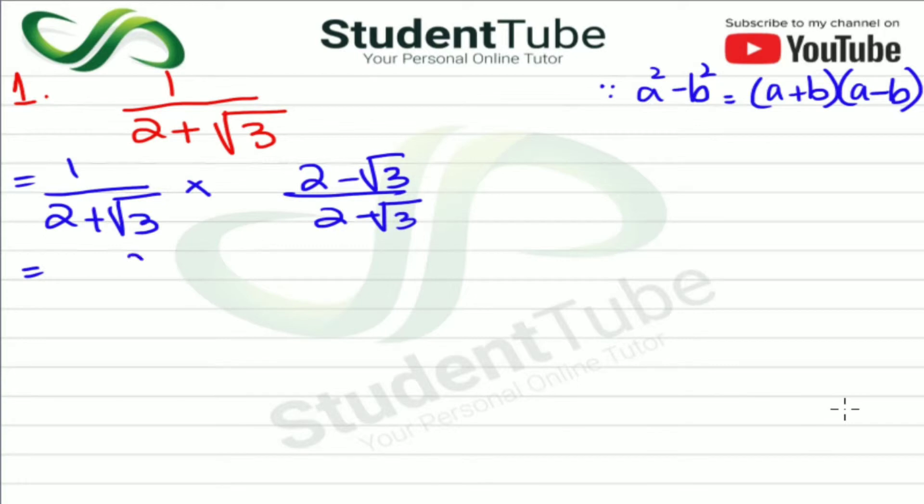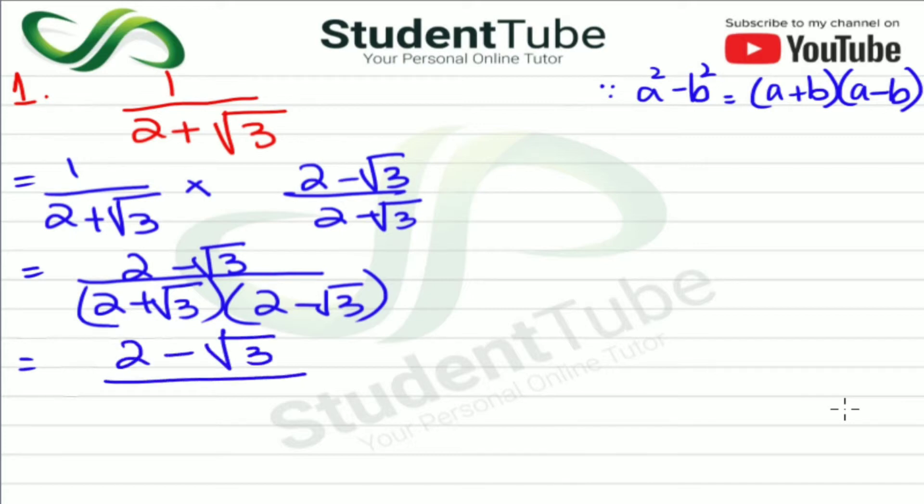Now, what do we do? We will multiply it. So this will be 2 minus under root 3. And here we will do 2 plus root 3 and 2 minus root 3. Now, we will consider this 2 plus 3 and 2 minus 3 as a and b. Which formula is this? This is a plus b and a minus b, so a squared minus b squared.